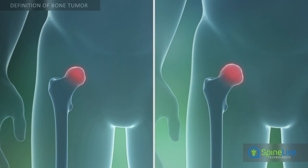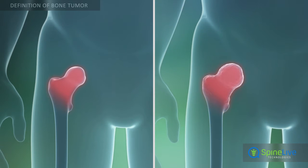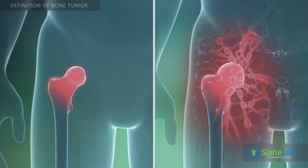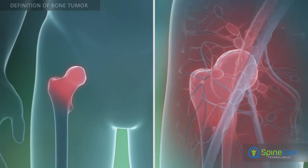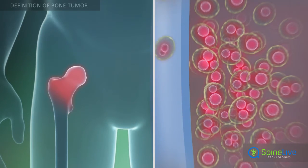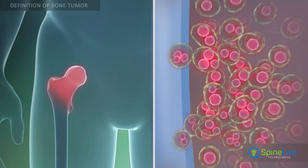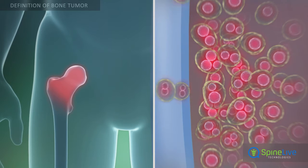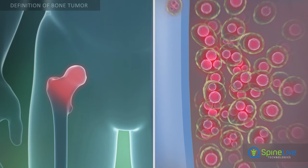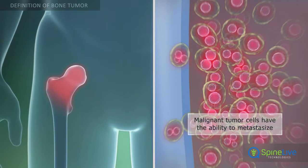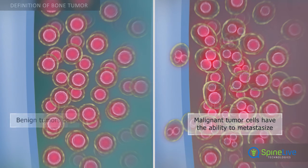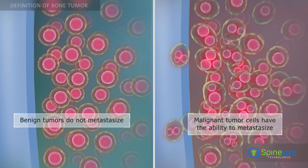Another way to classify bone tumors is by their clinical behavior and types of cells the tumor contains — whether or not the cells are malignant. This means how likely the cells are to spread to another area of the body, or to metastasize. If tumor cells are able to spread to other organs through the blood or the lymphatic system, or directly, the tumor is known as a malignant tumor. If a tumor cannot spread or metastasize, it is benign, regardless of how big it may grow.